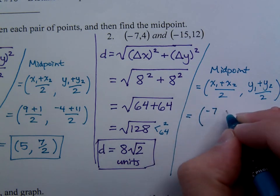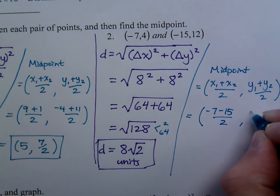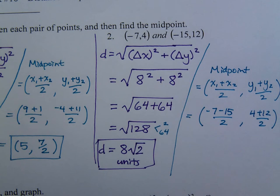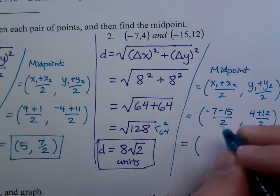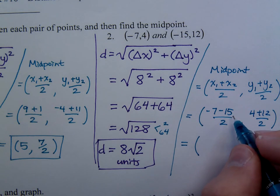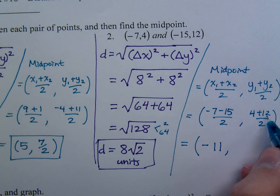So it's negative 7 and a negative 15 divided by 2, and then 4 plus 12, and that's divided by 2. So negative 7 minus 15 is negative 22, divided by 2 is negative 11, 4 plus 12 is 16, over 2 is 8.